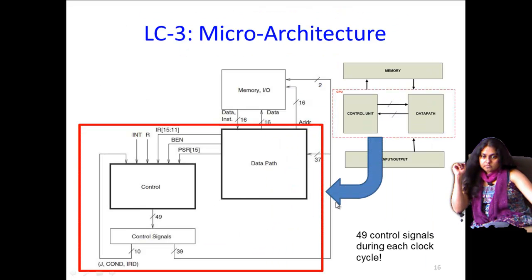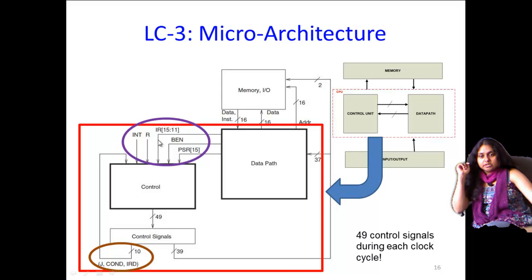Now if you look at the LC-3 micro-architecture again for these signals, you will notice that the data path is sending out a few signals to the control unit. These signals will determine or give information or input to the control unit about what the current instruction consists of. What is the value of bits 11 to 15 in the instruction register of the current instruction, what is the value of branch enable, what is the value of the processor status register. These are signals—other than the interrupt which comes externally—the IR, the BEN, and PSR come from the data path into the control.